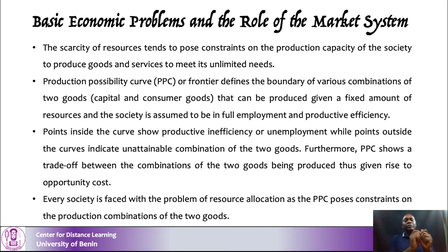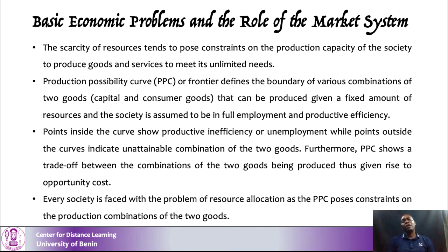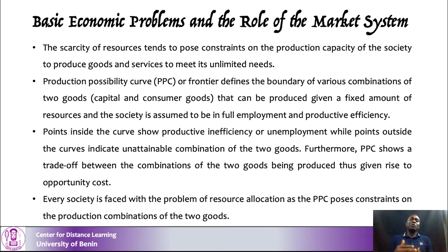Since there are not enough resources to produce both in totality, you need to take an aspect of capital goods and an aspect of consumer goods. That brings into mind the issue of trade-off — meaning you cannot have your cake and eat it. You simply cannot achieve two things together in a fully adequate and effective way, so one has to go. The sacrifice you make is the issue of trade-off: you have to let go of one in order to achieve the other. This takes us to what we call opportunity cost.